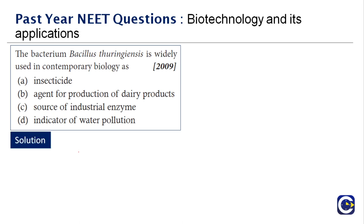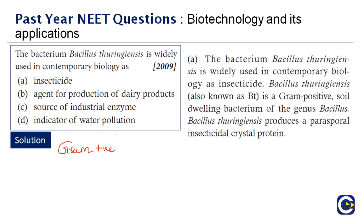Next question: the bacterium Bacillus thuringiensis is widely used in contemporary biology as — what is its main purpose? It is used in BT crops, which are transgenic crops. This gram-positive, soil-dwelling bacterium produces a parasporal insecticidal crystal protein that kills pests when ingested. Therefore the right answer is option A.